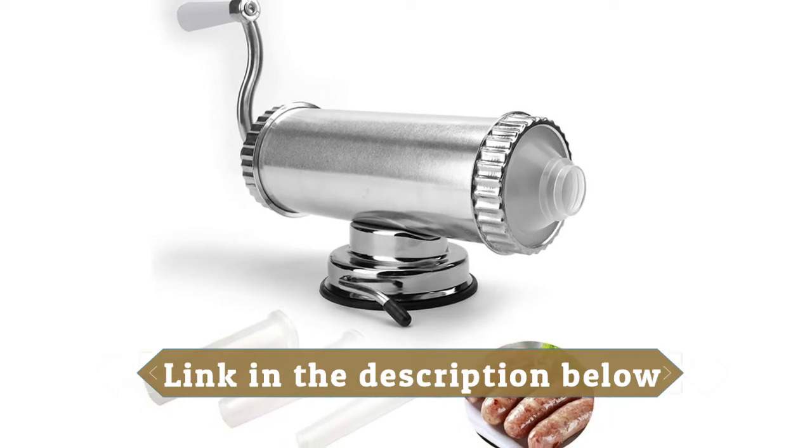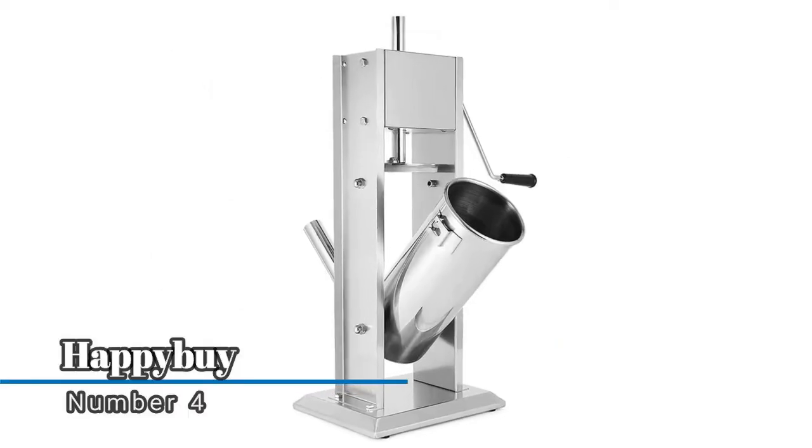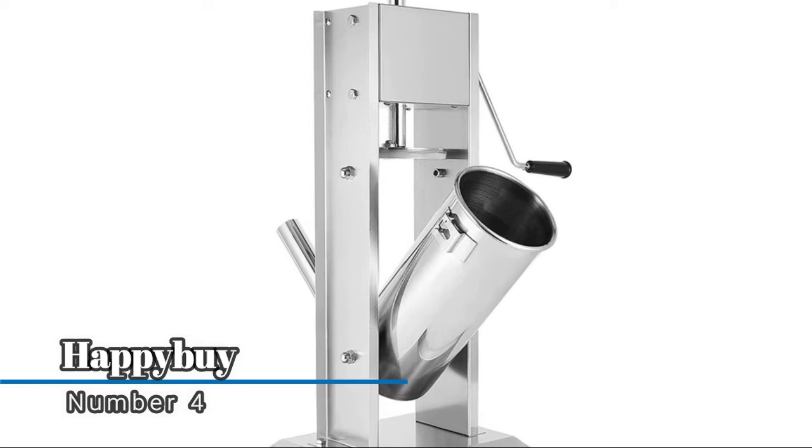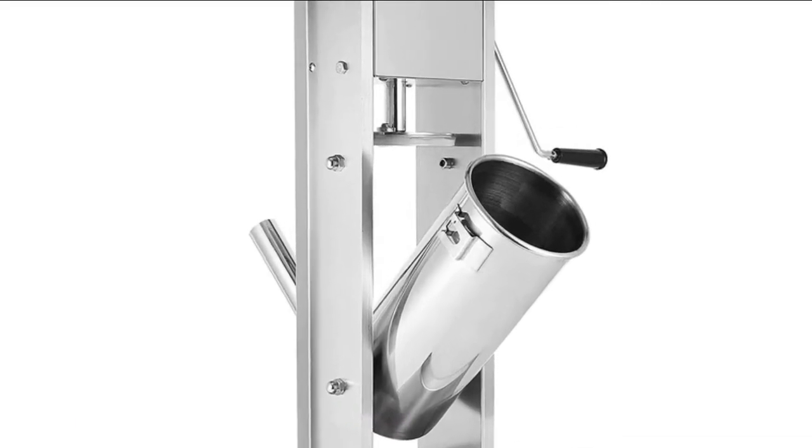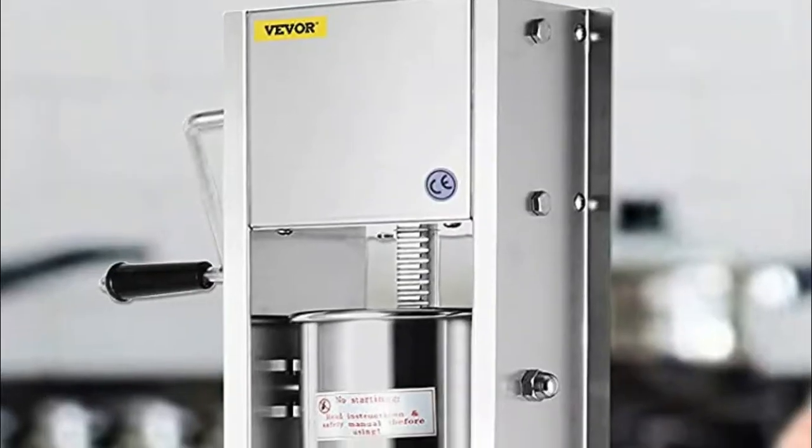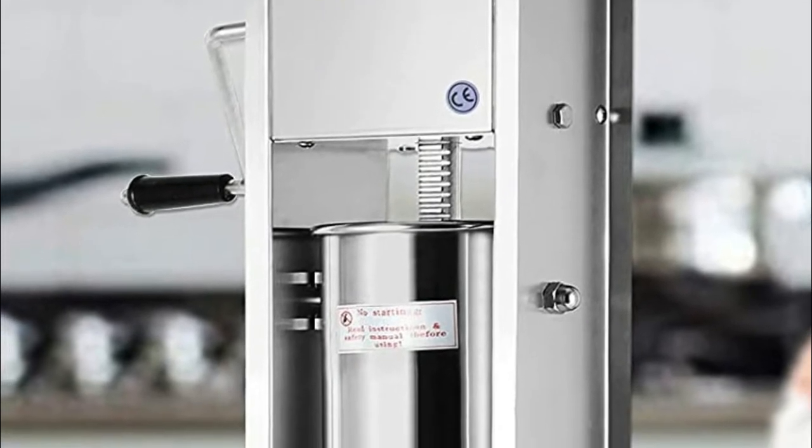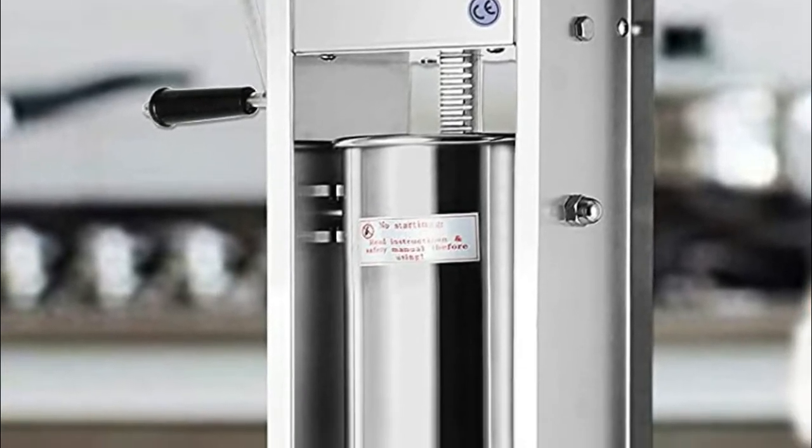Number 4: Happy By. Two optional speeds for you to choose: fast speed for filling the cylinder, slow speed for stuffing casings. An ergonomic handle of the sausage stuffer machine is equipped for convenient and efficient operation.